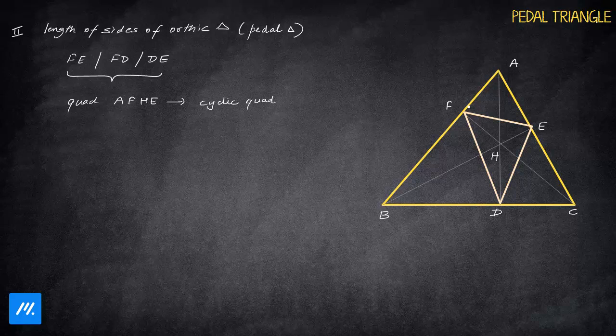Why? Obviously because this angle is 90 degrees, this angle is 90 degrees, vertically opposite angles having sum 180 degrees. That means AFHE becomes your cyclic quadrilateral, and we need to find FE from this. If we can find FE from this, our target would be achieved.